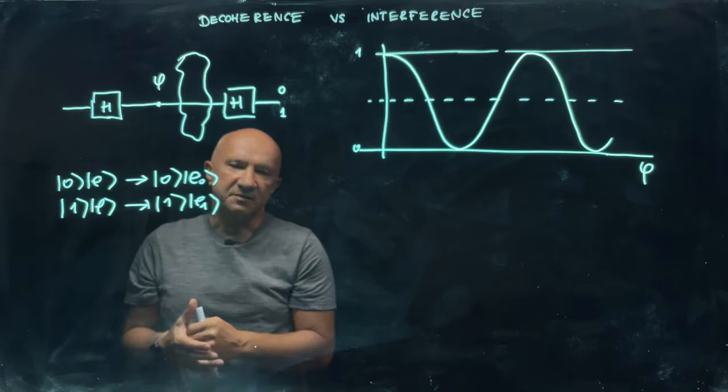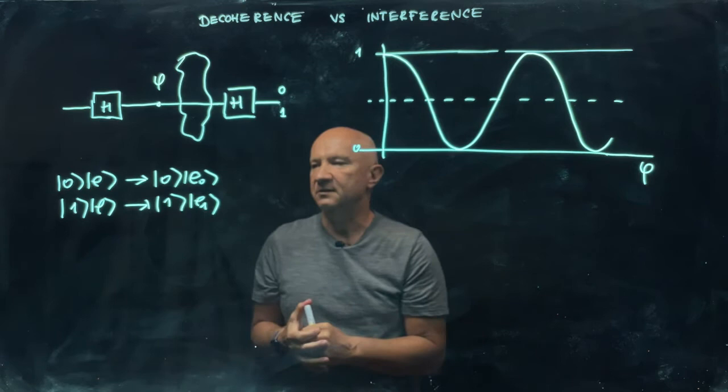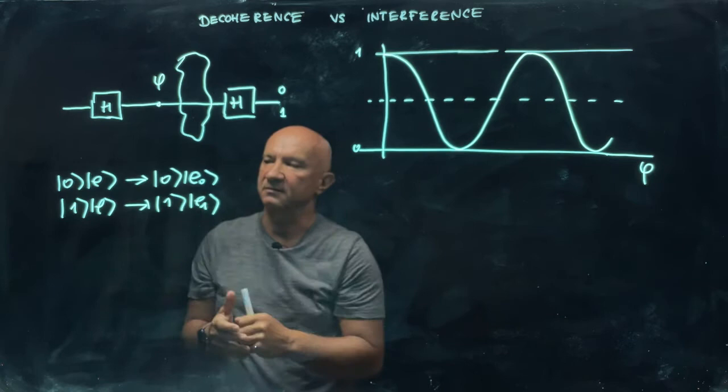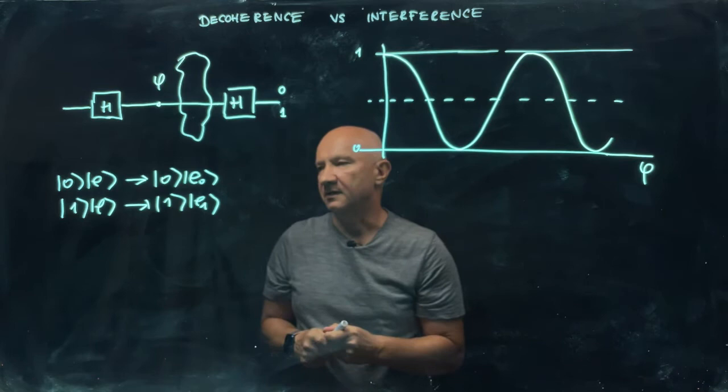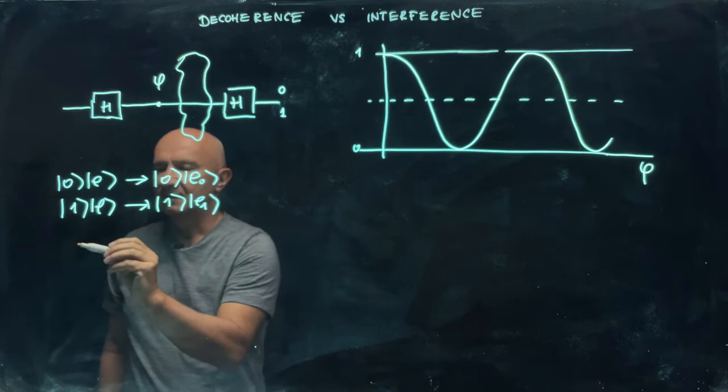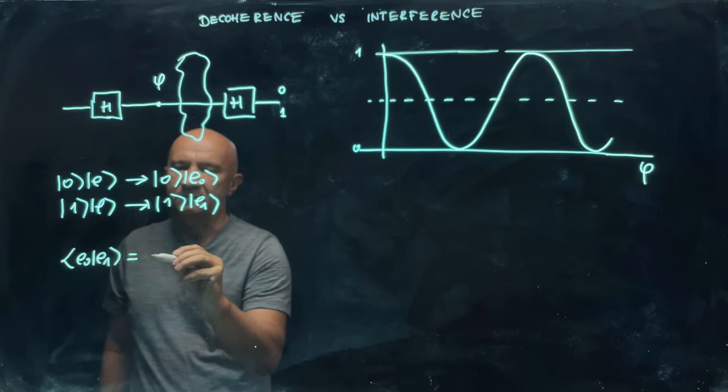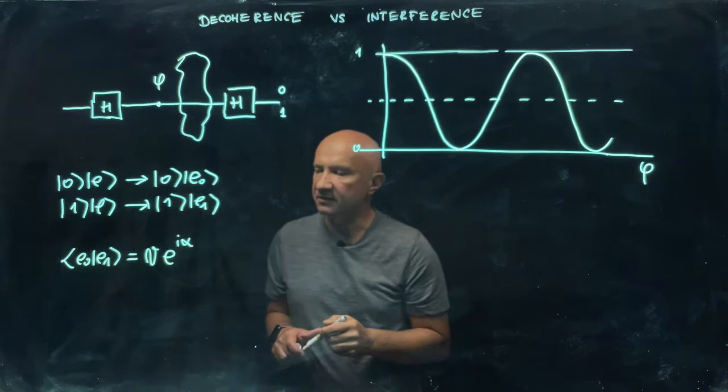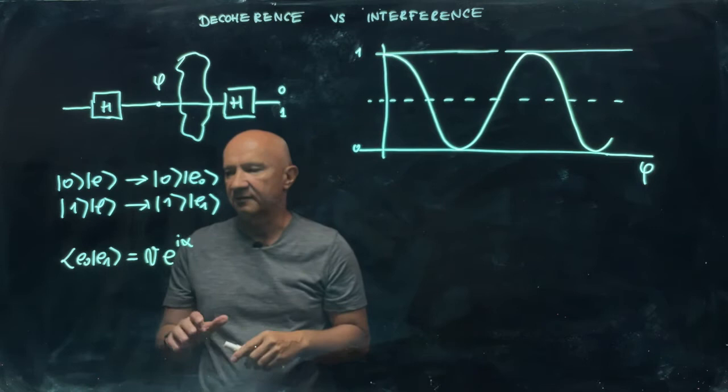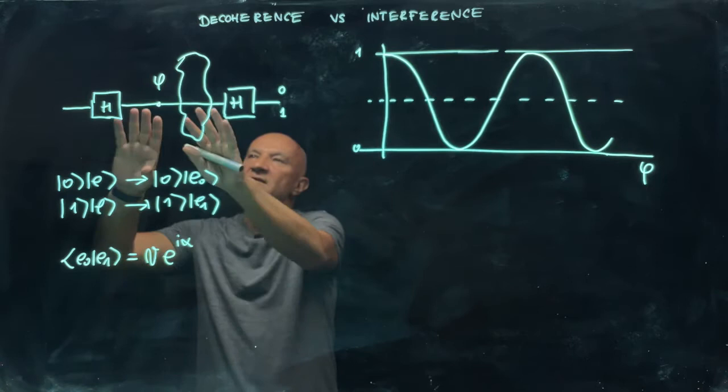And likewise, when qubit is in state one and the environment is in state E, the qubit environment evolves into one. So E1, where E1 is the new state that knows something about the state of the qubit. We shall assume that E0 and E1 are not necessarily orthogonal. And also, let me just write that E0·E1 is equal to Ve^(iα). It's a scalar product of the two. As you can see, it's not necessarily orthogonal. It's not necessarily zero.